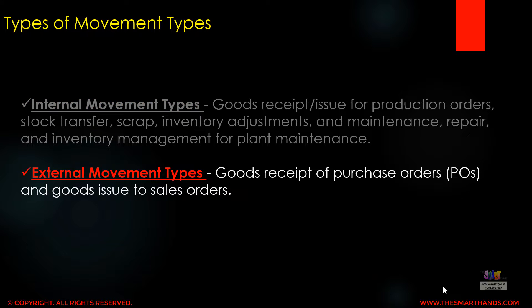We also have external movement types. For example, any transaction linked to external goods issue or goods received. Goods received for a purchase order is an example of an external movement type, as is a goods issue to a sales order. We will discuss movement types in more detail in another video.